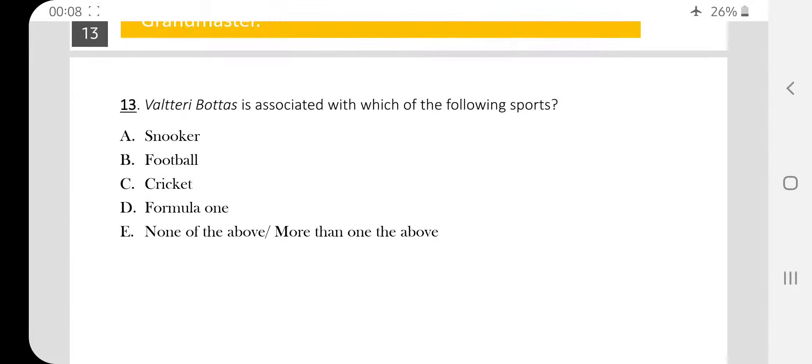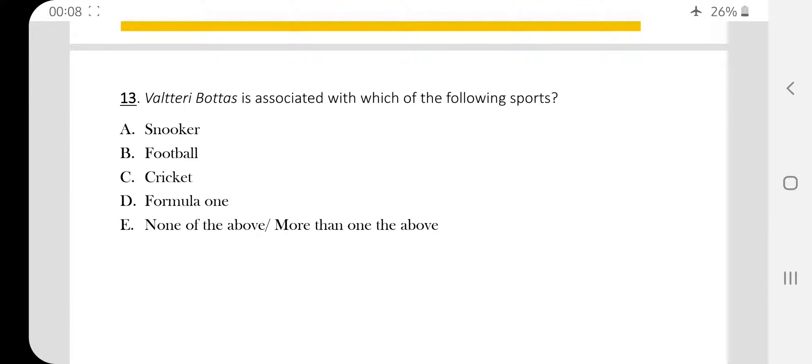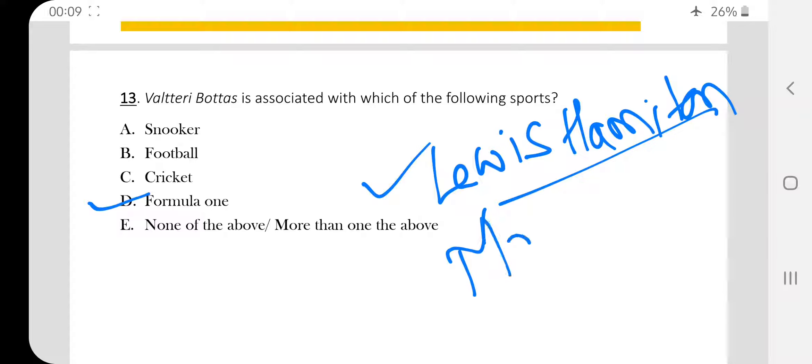Question number thirteen. Valtteri Bottas is associated with which of the following sports? Valtteri Bottas is related to Formula One racing. In August's current affairs we also saw one name, Lewis Hamilton. He is also a Formula One player. Apart from him, we also saw Max Verstappen in August. He is also related to Formula One.